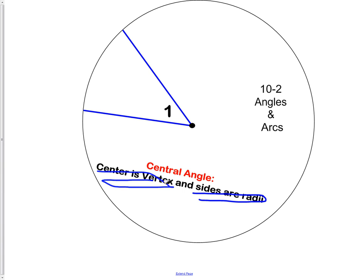So the center is the vertex of the angle and the sides are radii. A central angle, the key thing to remember is simply that the vertex of a central angle is always in the center of the circle.